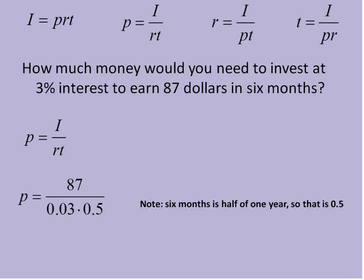So if they give you an amount in months, you're going to have to convert it into representing it in years. So six months is half of the year. So it would be multiplied times 0.5.